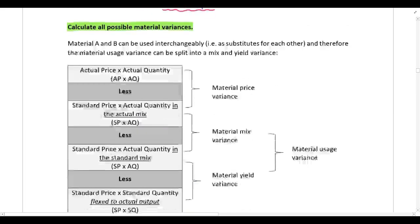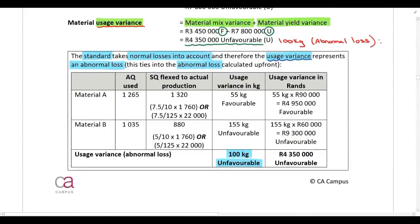I'm showing you how the usage variance was calculated. We are comparing the actual quantity in the actual mix — this comes directly from the question, the actual quantity purchased. Remember, they don't hold any inventory, so that is the actual quantity used in production. We then need the standard quantity flexed to actual production, because the standard quantity must always be flexed to actual production when we calculate variances.